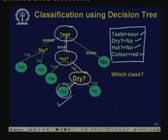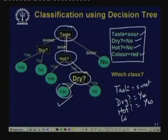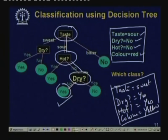Note that in the training set there could be other attributes such as color which are not used in the decision tree, because the decision tree finds the correct class without consulting that attribute. For another example with taste=sweet, dry=yes, hot=yes, color=yellow: taste is checked and is sweet, then dry is checked and is yes, so the food is liked. The attributes hot and color are not checked.